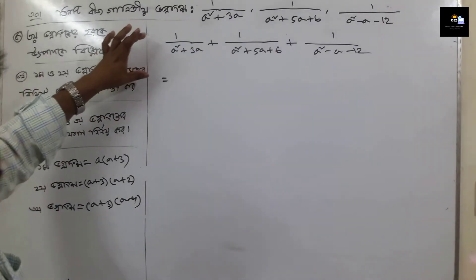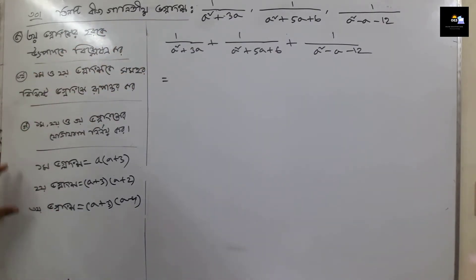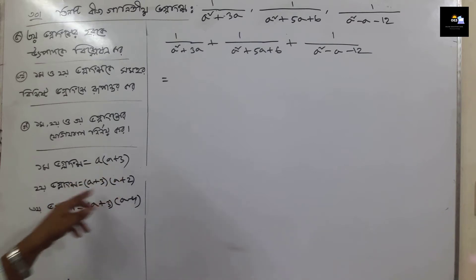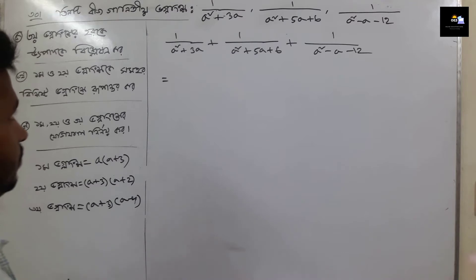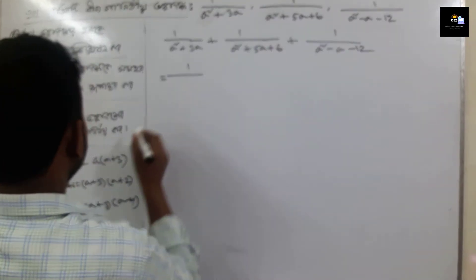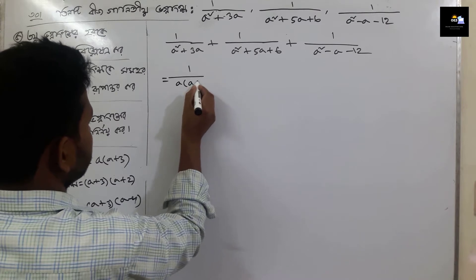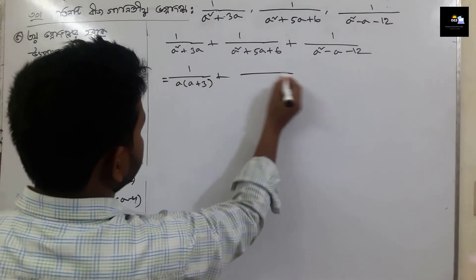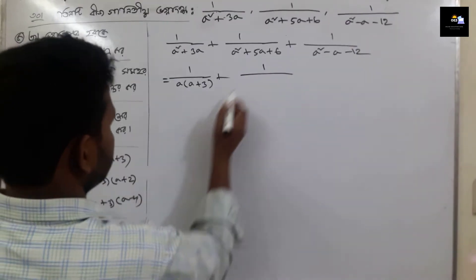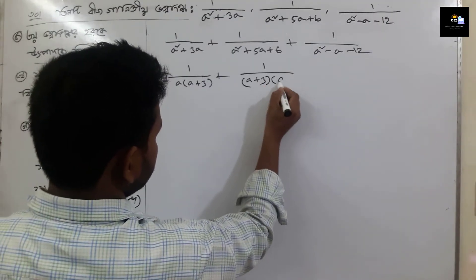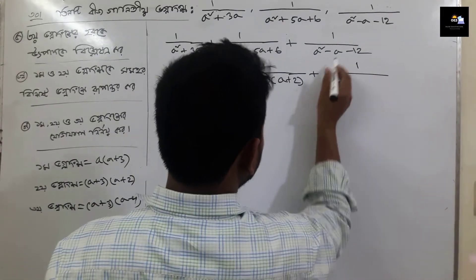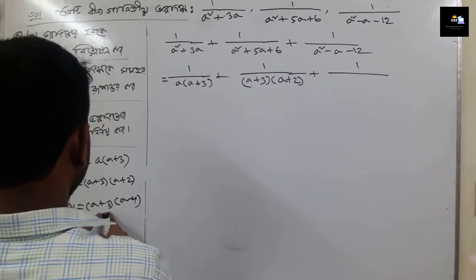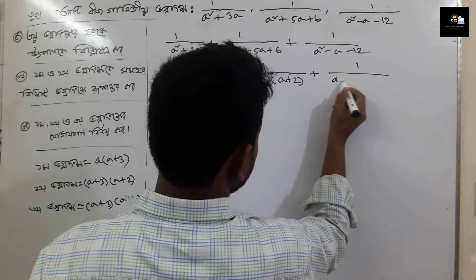Now if we look at the number which is higher, we have to find a number. If we want to write a into a plus 3, then a plus 3 and a plus 3 and a minus. So: 1 by a into a plus 3, plus the function a plus 3 into a plus 2.